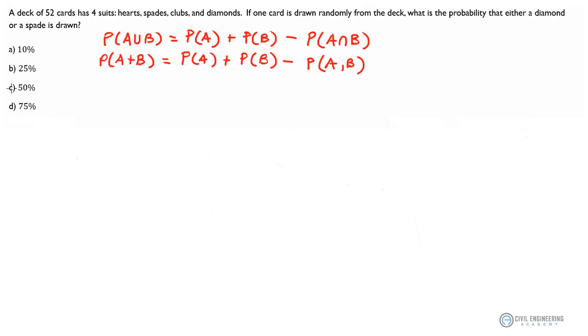I've got four suits and I'm gonna draw just one card. I could kind of intuitively reason that my chances are gonna be 50 percent here and pick answer C. But let's just work this using the law.